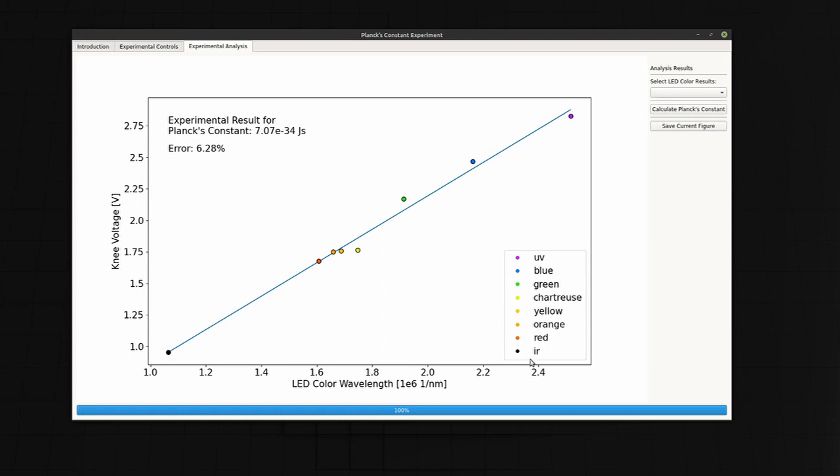This is a color coded legend that shows all of the LEDs that I have data for. Planck's constant can be obtained from this plot by calculating the slope of the best fit line for all the data.